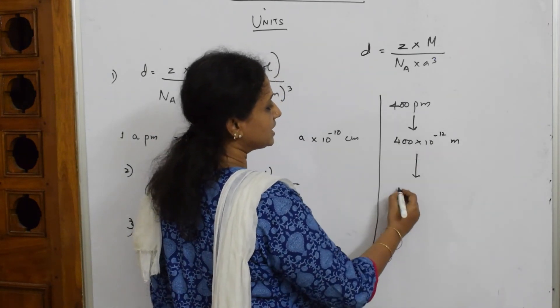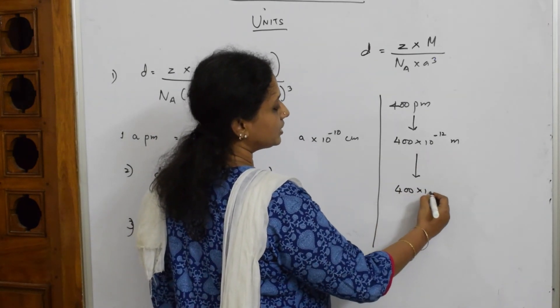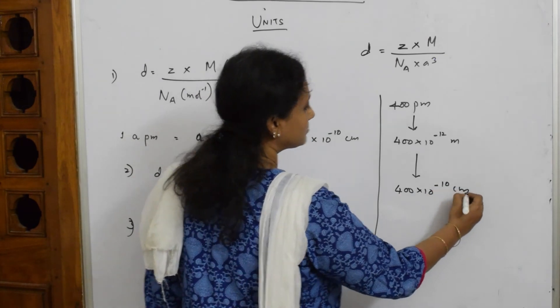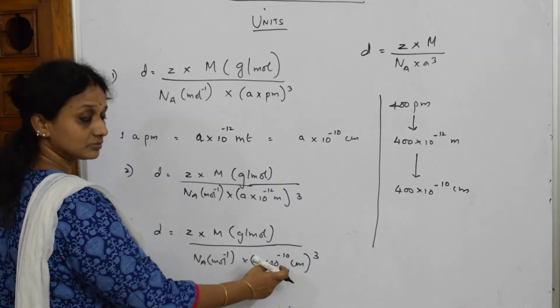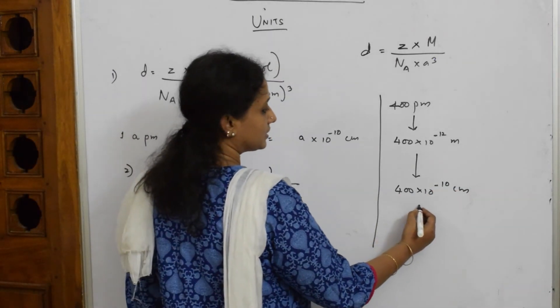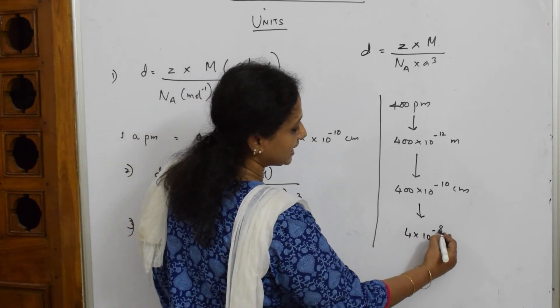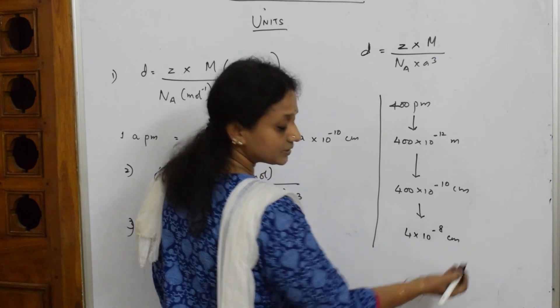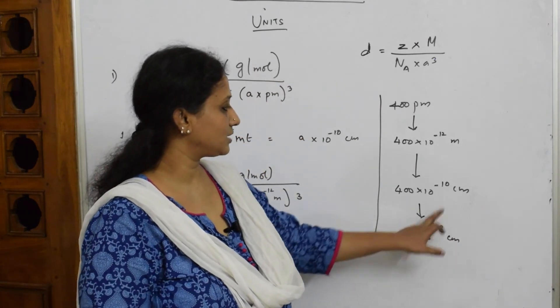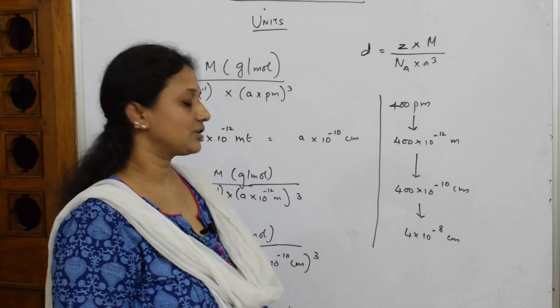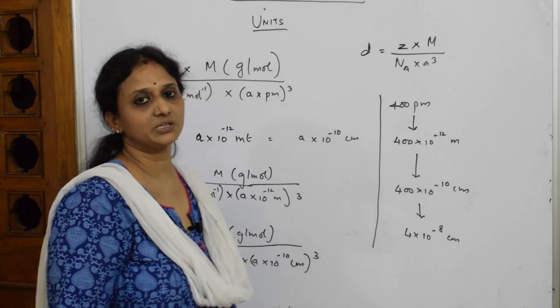If I convert this into centimeter, 400 into 10 raised to minus 10 centimeter. That is what I have shown you. Further if I convert, 4 into 10 raised to minus 8. I just took out these two and this is how you are going to convert and use it for the numericals.